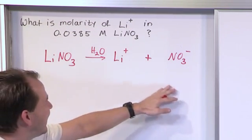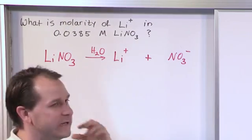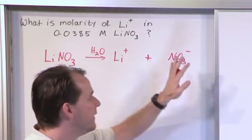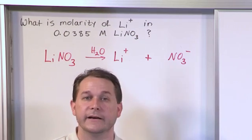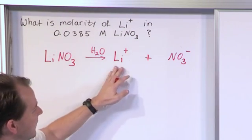So by the way, what's the cation and what's the anion? The negative ion is the anion. So the nitrate ion is the anion. The lithium ion is the cation.